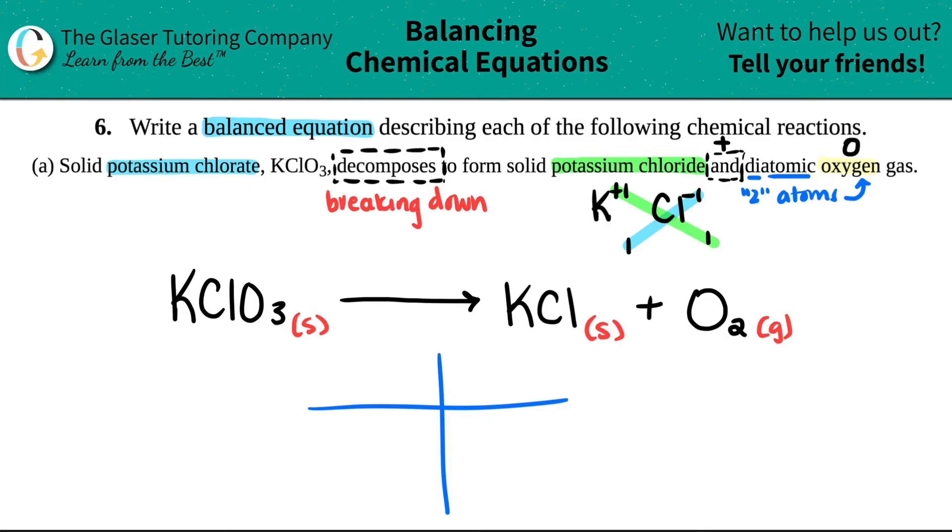You can do the chart method - there's many videos on this - but I'm going to look at this and see if I can balance it. I have one potassium on the left, one potassium on the right, so that's balanced. One chlorine on the left, one chlorine on the right, so that's balanced.